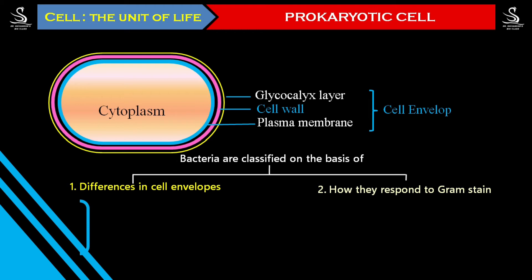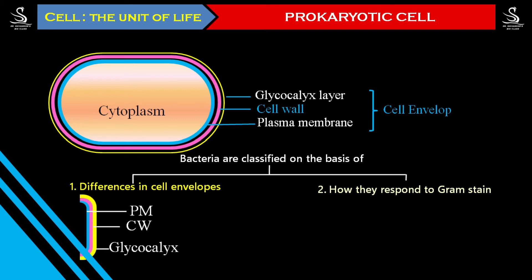Observe here: there is a plasma membrane, next is the cell wall, and next is the glycocalyx layer — with no space in between these layers, and almost all layers are thick. That is one type. In certain other organisms, following the plasma membrane there is a cell wall, but in between the plasma membrane and the cell wall there is some gap — that space is called the periplasm.